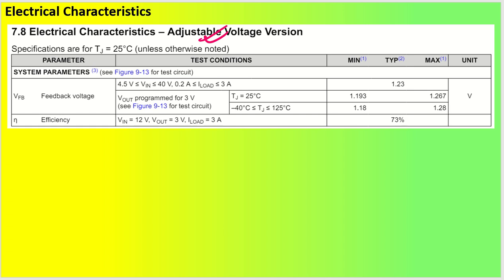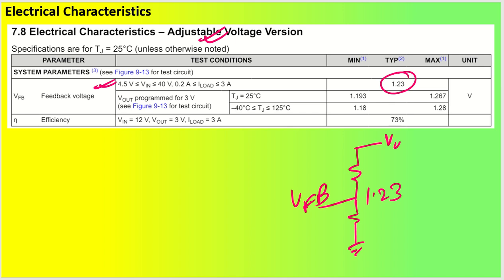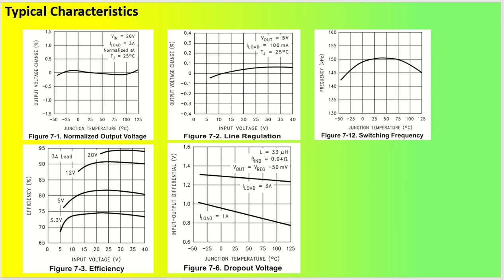For the adjustable version, input voltage ranges from 4.5V to 40V. The feedback voltage VFB must be maintained at 1.23V. Two resistors — R1 and R2 — are used to set the output voltage by setting the VFB pin to 1.23V. Our aim is to design R1 and R2 based on the formula to achieve the desired output voltage. Minimum efficiency reported here is around 73%.